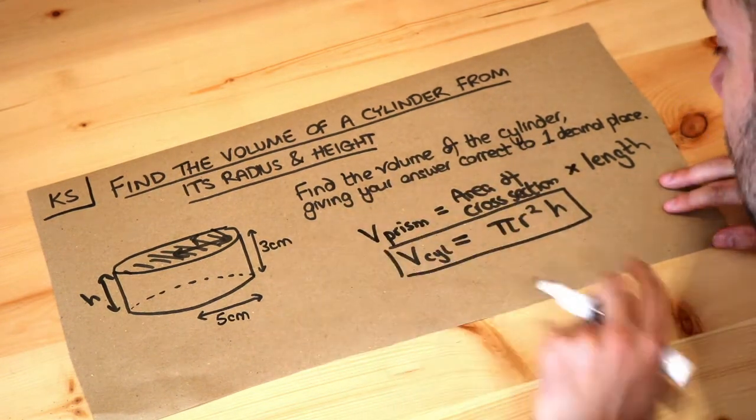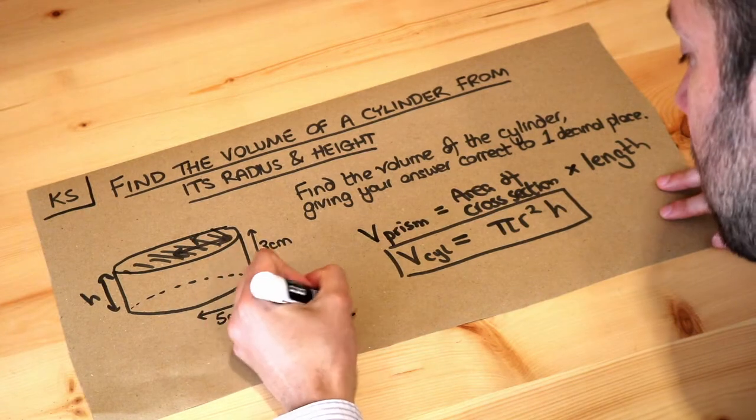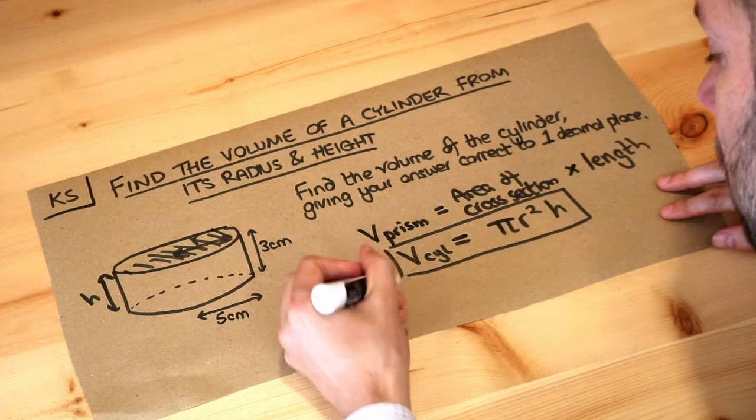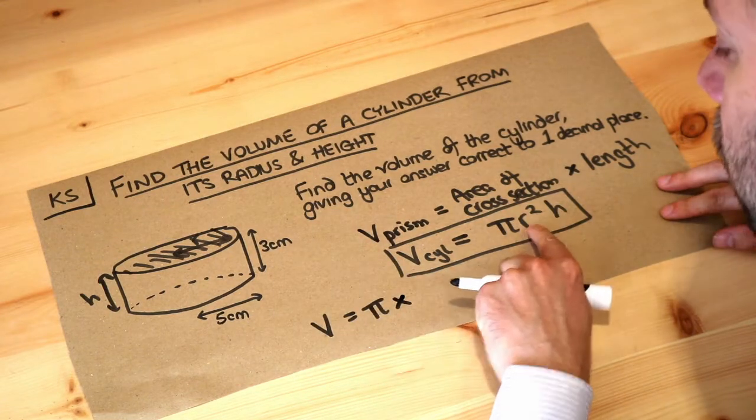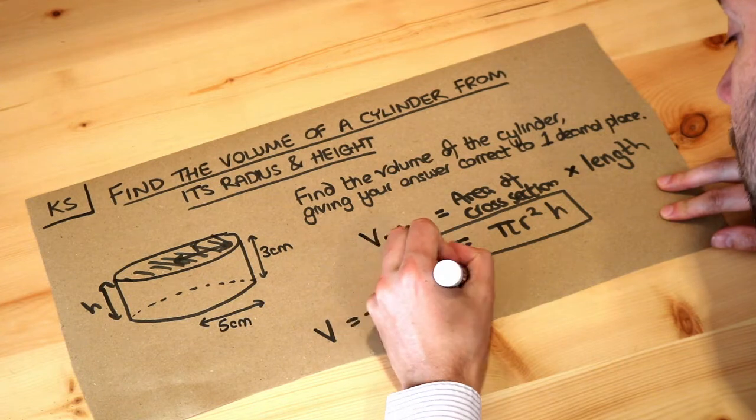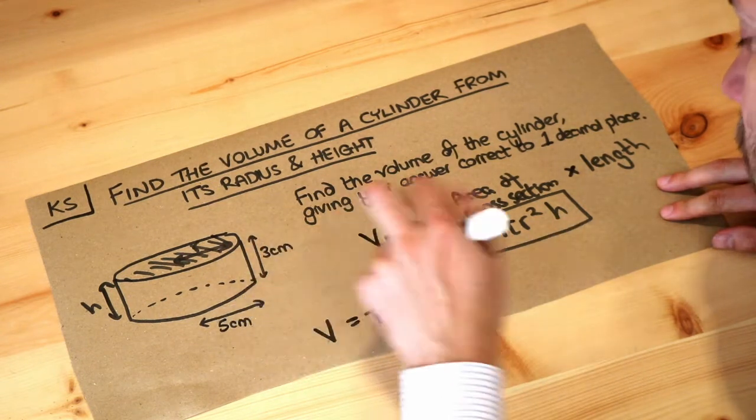So let's just use the values that we have. The volume of our cylinder is pi, and then r squared, so pi times by the radius squared, where the radius is 5, 5 squared, multiplied by the height, which is 3.